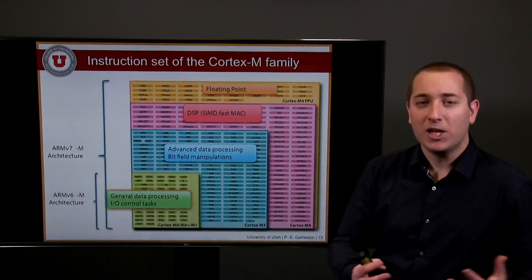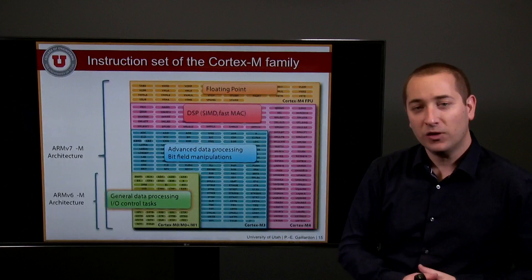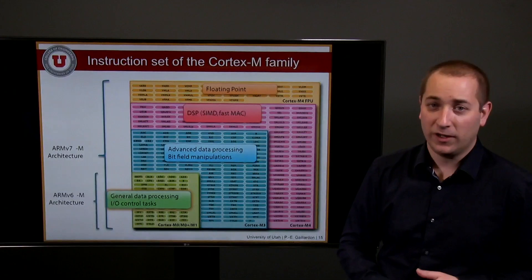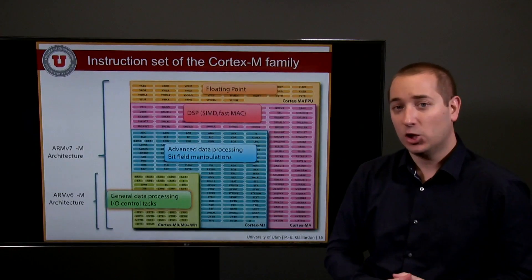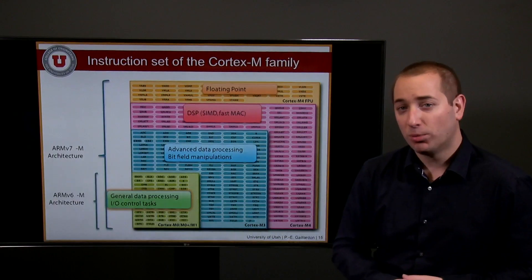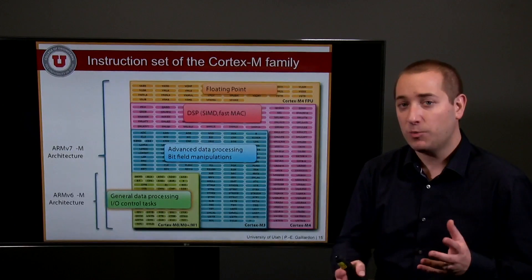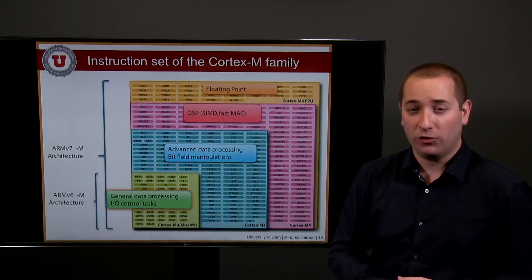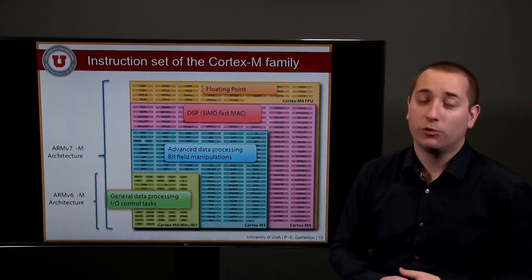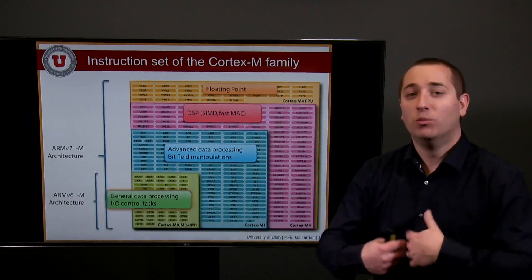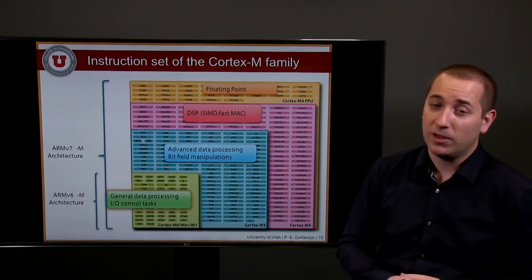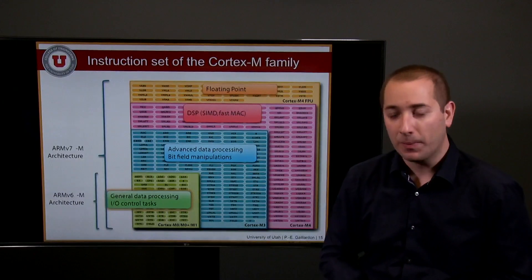In addition to the three big family differences, within a given family you will also find more and more complex architectures. The main differentiation within the core architecture is the instruction set, which corresponds to the semantic capabilities of your processor — how many different instructions it can process. The more instructions you have, the more complex the processor, the more specialized computing blocks are required to implement them, and of course, the more costly it will be — yet more capable.